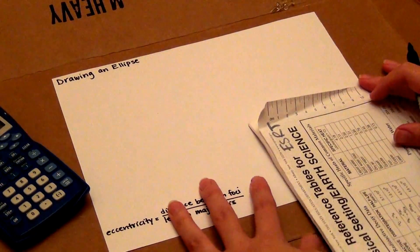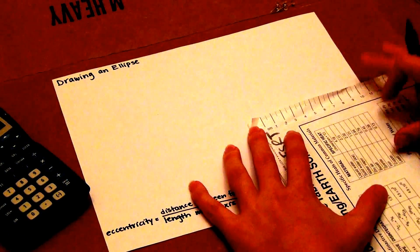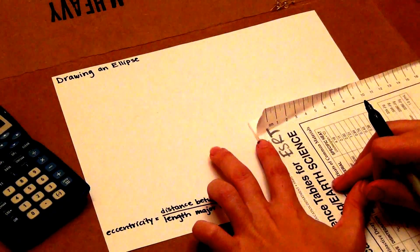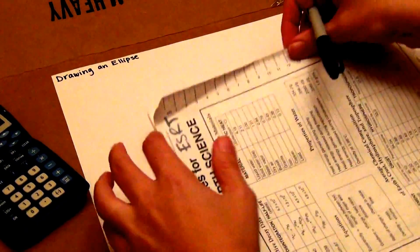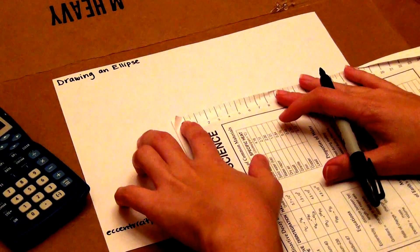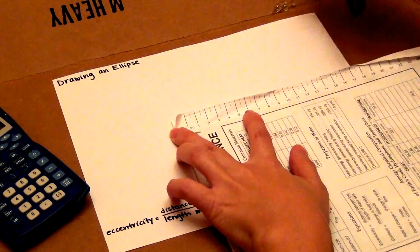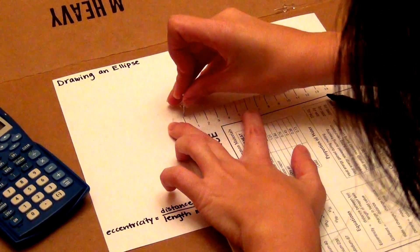So we're going to draw an ellipse with the distance between the foci being 4 centimeters. Remember that the foci are the two center points of the ellipse and where you're going to put your thumbtacks. So you take the reference table, putting it as close to the center of the paper as you can, and you put your thumbtacks 4 centimeters apart.